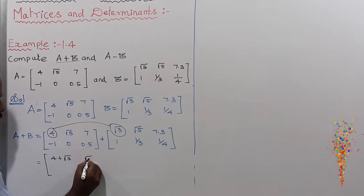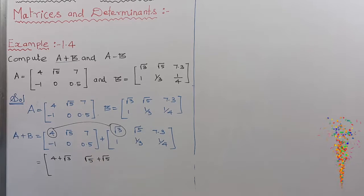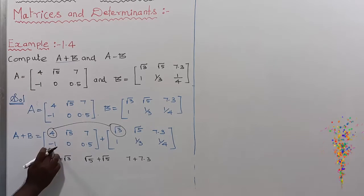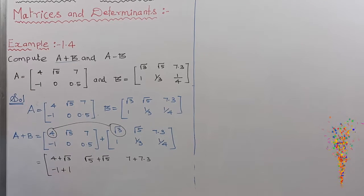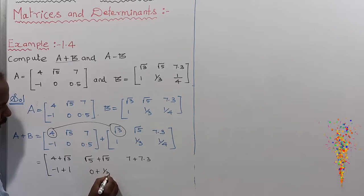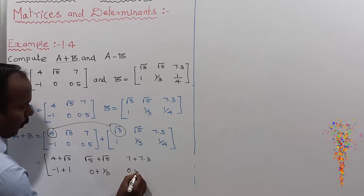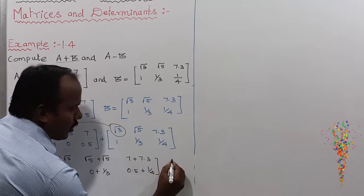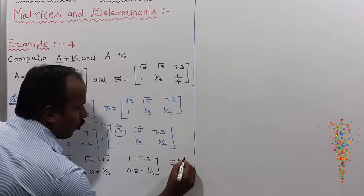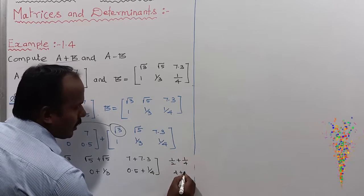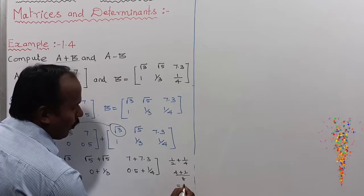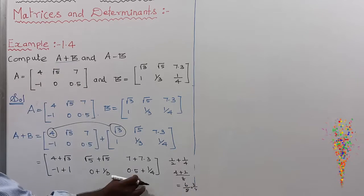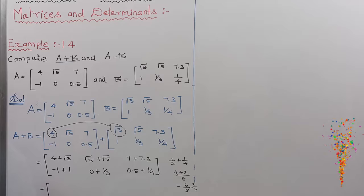Next: √5 plus √5. Next: 7 plus 7.3. First row completed. Second row: minus 1 plus 1, then 0 plus 1/3, then 0.5 plus 1/4. Since 0.5 equals 1/2, we get 1/2 plus 1/4 equals 4/8 plus 2/8 equals 6/8 equals 3/4.